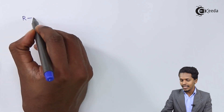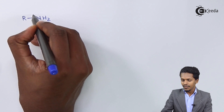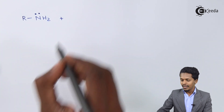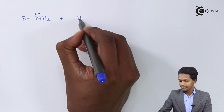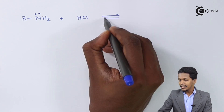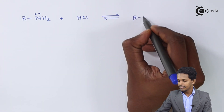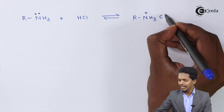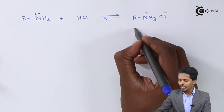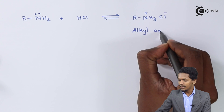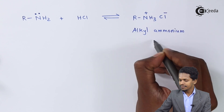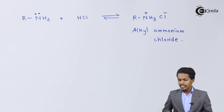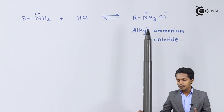For example, consider the reaction of R-NH2, which has a lone pair of electrons, with a strong acid like HCl. The product formed is R-NH3+Cl−, where the nitrogen acquires a positive charge. This product is known as alkylammonium chloride. So a base has reacted with an acid to form a salt.